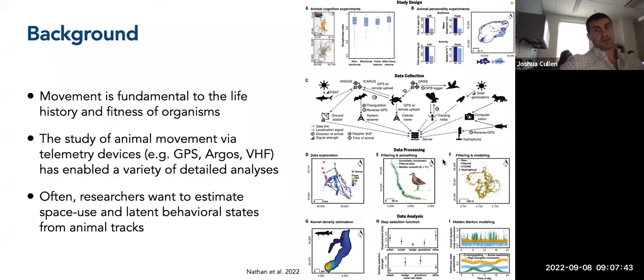And after you've done so, then you get to this data processing phase where you could be doing things like data exploration, maybe filtering and smoothing the tracks, and then getting to a point where you're modeling the tracks. And then ultimately, what a lot of people want to accomplish with these tagged animals is to estimate space use with methods such as kernel density estimation. Maybe they're interested in resource or habitat selections, they might use a step selection function. And then another potential interest is behavioral states, and one way to achieve that is with hidden Markov modeling.